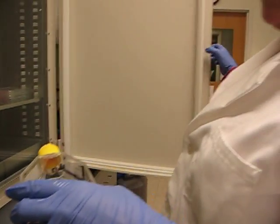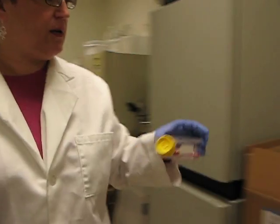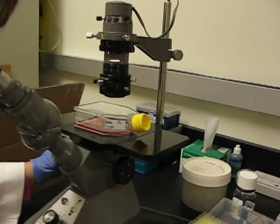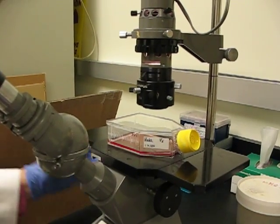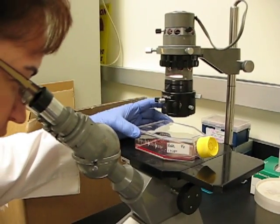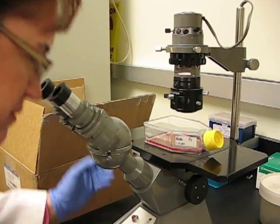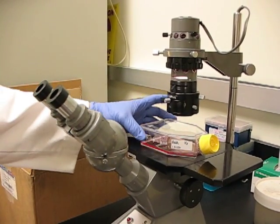Today we're subculturing HeLa cells. I take a quick look at them on the microscope to determine cell health and confluency, so I can make notes in my notebook. These look good. They're about 90% confluent, so they're ready to passage today.